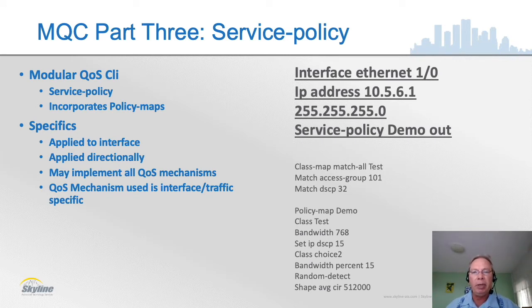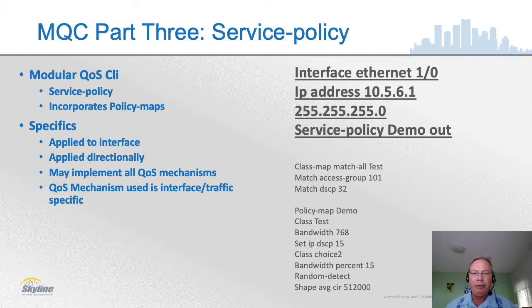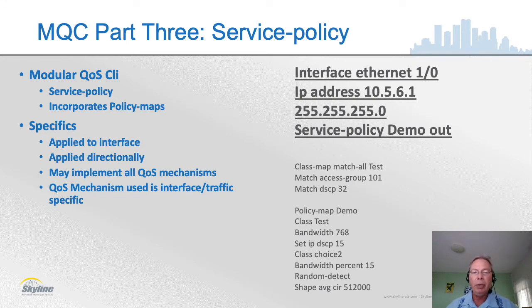The idea is to look at interfaces first to see what's actually applied, then read backwards to see what it's doing. On this interface, 'service policy demo out' — what is policy map demo doing? For class-test traffic, it's setting bandwidth at 768 and DiffServ code point at 15. For class-choice-two, it's setting bandwidth at 15%, has weighted random early detect turned on, and it's shaping. Then you would look at the class maps called 'test' and 'choice two' to understand what traffic is being affected.